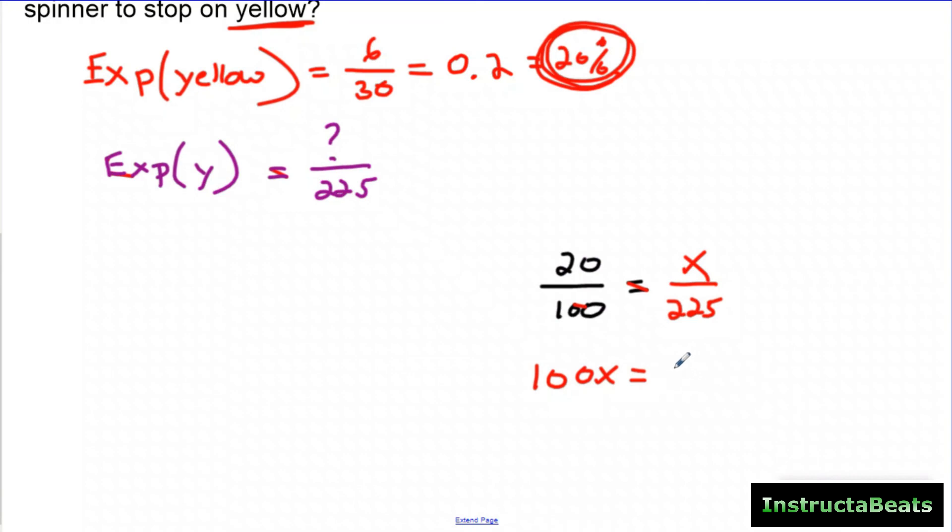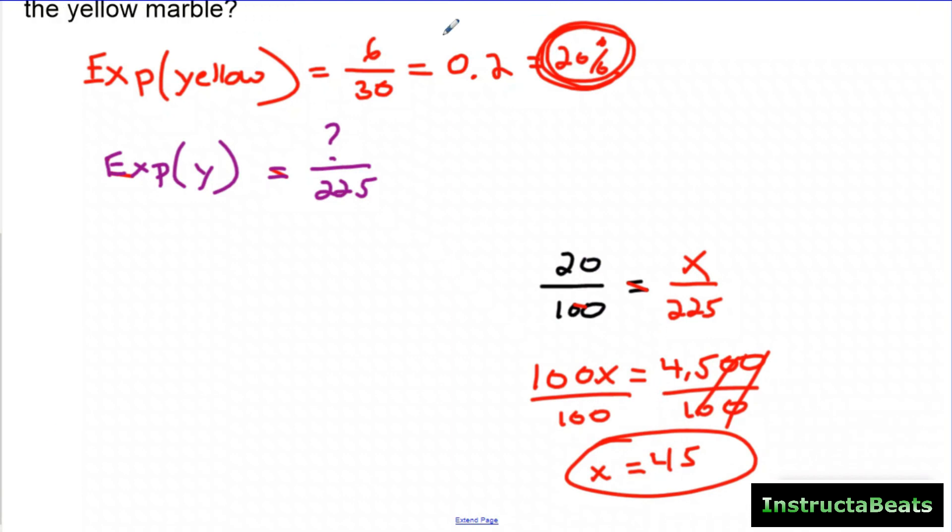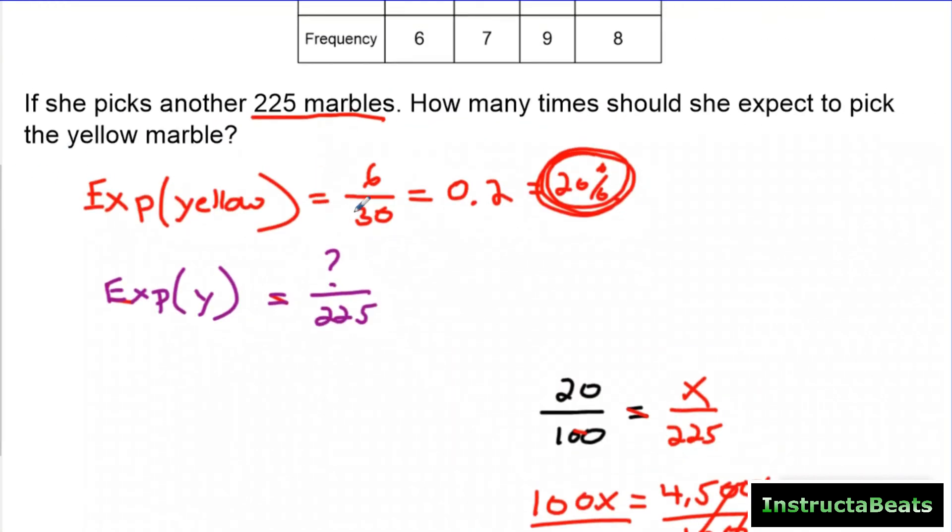So to solve for proportions, we're going to cross multiply here, get 4,500. We're going to just solve for X using our algebra knowledge. And we're going to say that the number of times it will land, cross those out, use a shortcut, is going to be 45. If we rolled it another 225 times, we're expecting it to land on yellow 45 of those times. We used our experimental probability to help us figure that out.